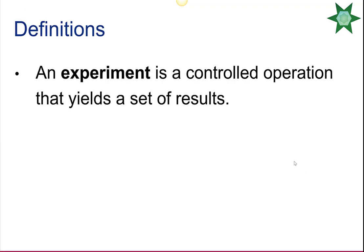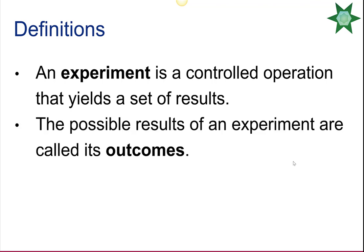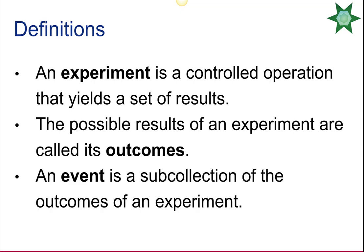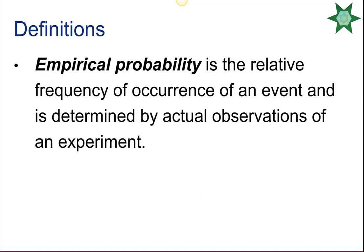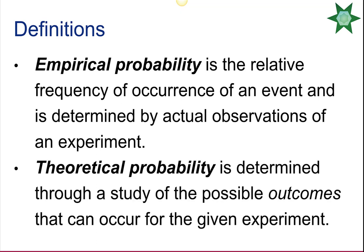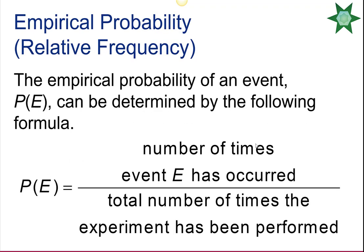To study probability, we need some definitions. An experiment is a controlled operation that yields a set of results. The possible results of an experiment are called outcomes, and an event is a subcollection of those outcomes. Empirical probability is the relative frequency of an occurrence of an event, determined by actually observing the experiment, compared to theoretical probability, which is determined by studying the outcomes that can occur and calculating those probabilities.